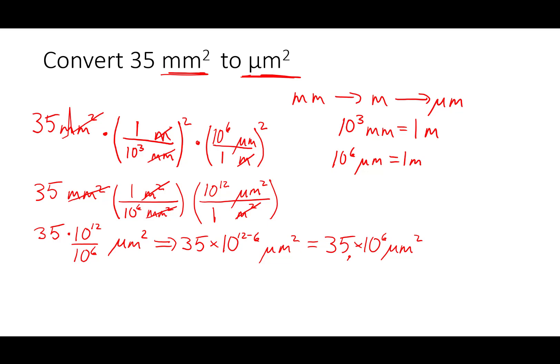That's almost good; we just need to get it in correct scientific notation. I'm going to need to move that decimal place over 1, which means my order of magnitude and my exponent is going to change by 1. Since my coefficient got smaller by a factor of 10, my power of 10 has to get larger by one order of magnitude. So this is going to be 3.5 times 10 to the 7 micrometers squared. That's our final answer in correct scientific notation.